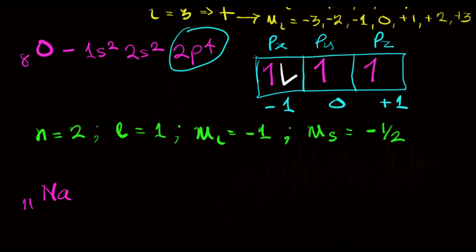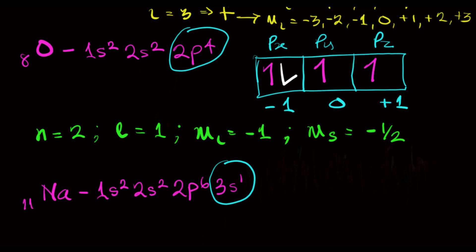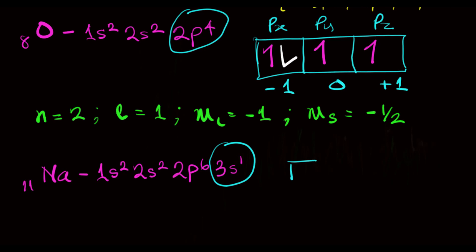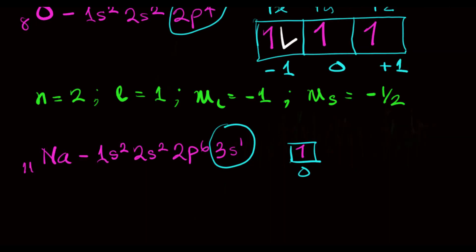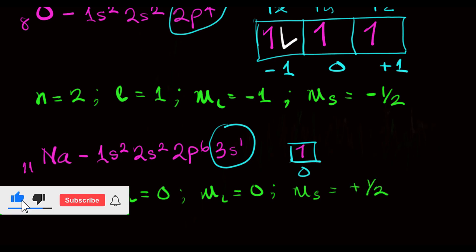For sodium, the electronic configuration is 1s2, 2s2, 2p6, and 3s1. We are focusing on the last orbital, that's the 3s orbital. In the s subshell there's only one orbital with the magnetic quantum number 0, and since there's only one electron there, the 4 quantum numbers for the last electron in sodium will be: N equals 3 (the third shell), L equals 0 (the s subshell), M sub L equals 0 (the s orbital), and M sub S equals plus half, which represents the upward spin.